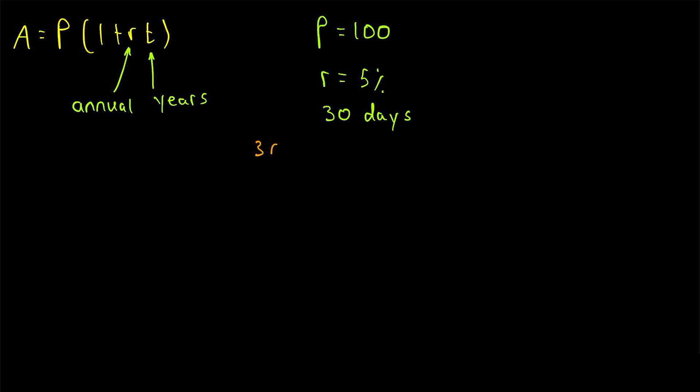How do we make that conversion? A reasonable thing to do would be to say, well, let's just divide 30, the number of days, by 365, the number of days in a year. This is approximately 0.0822.